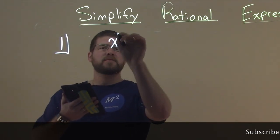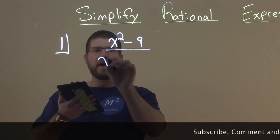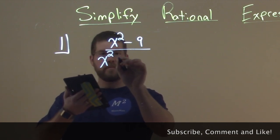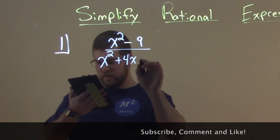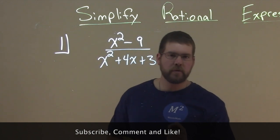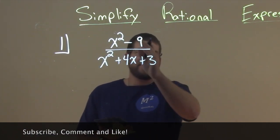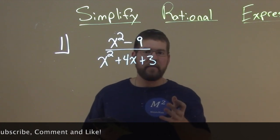So we have x squared minus 9 over x squared plus 4x plus 3. And as you can see, we have two polynomial functions, one in the numerator, one in the denominator, and they're basically being divided by each other.